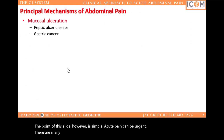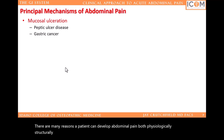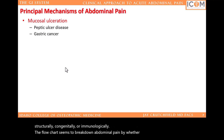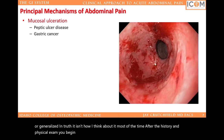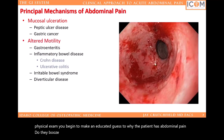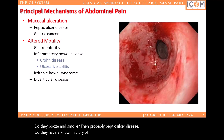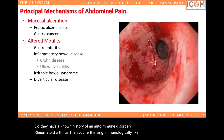There are many reasons a patient can develop abdominal pain — physiologically, structurally, congenitally, or immunologically. Most of the time, after the history and physical exam, you begin to make an educated guess as to why the patient has abdominal pain. Do they drink and smoke? Then probably peptic ulcer disease. Do they have a known history of an autoimmune disorder like rheumatoid arthritis? Then you're thinking immunologically, like Crohn's disease or ulcerative colitis. Have they had chemotherapy recently? Then maybe they have typhlitis, which is inflammation of the cecum in patients receiving chemo. What about diabetes? They might have gastroparesis, ketoacidosis, or a host of other electrolyte abnormalities.